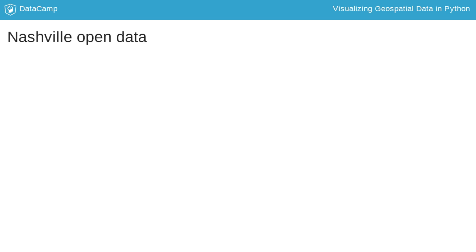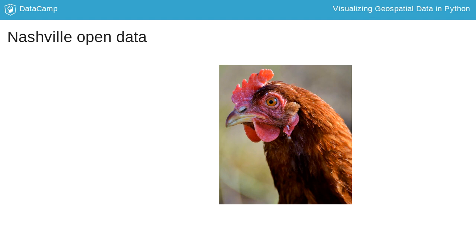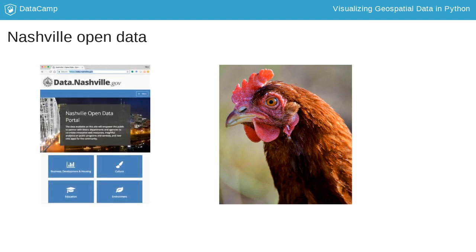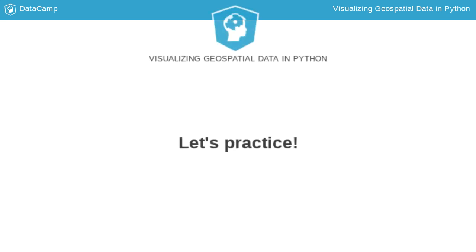In your first exercise, you'll be looking at where the chickens are in the city of Nashville, Tennessee, and the United States. The data you will use come from Nashville's Open Data site. Your city, state, or country is likely to have Open Data too — it's becoming more prevalent. Open Data is a great way to explore the places where you live and work while practicing your skills. Let's go get our chicken data and plot the locations where domesticated hen permits have been issued using longitude values for our x-axis and latitude values for our y-axis.